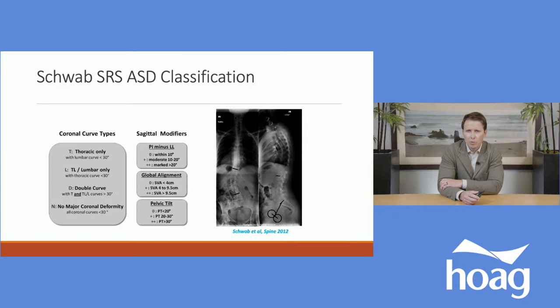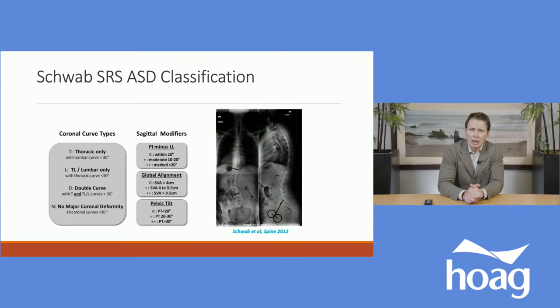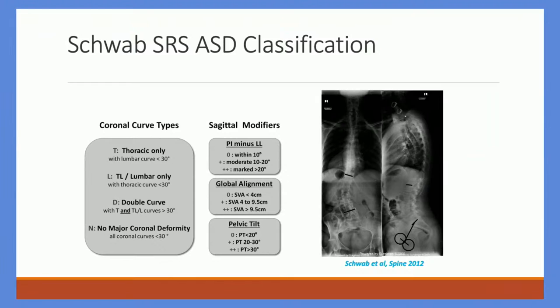The way we describe adult spinal deformity is through a classification score, developed over a decade ago to facilitate communication between physicians and guide treatment for surgeries. We describe what type of curve it is — whether the deformity is in the thoracic, thoracolumbar-lumbar region, is a double curve, or has no major coronal deformity. The right-hand boxes refer to the compensation mechanisms the spine uses to maintain upright posture, classified by severity. The greater the compensation mechanism, the greater the disability and pain.